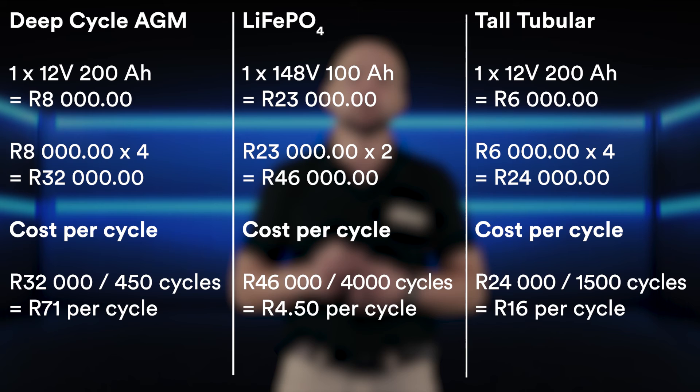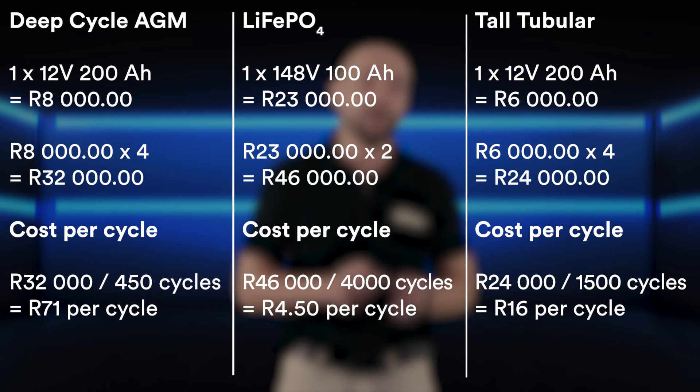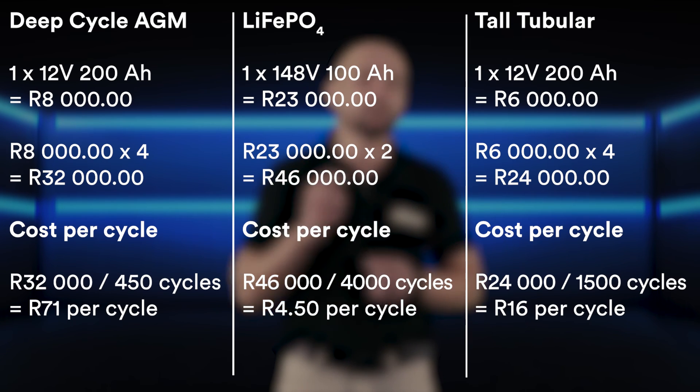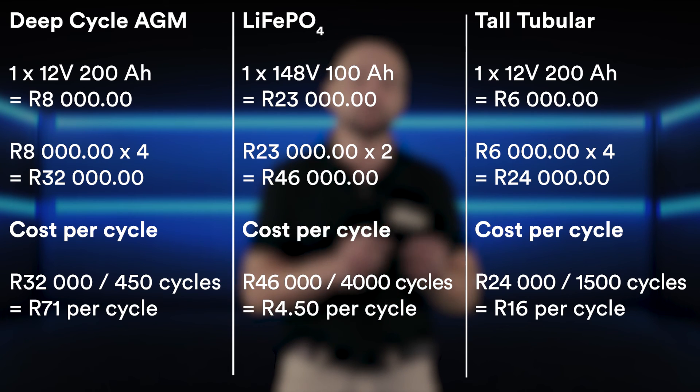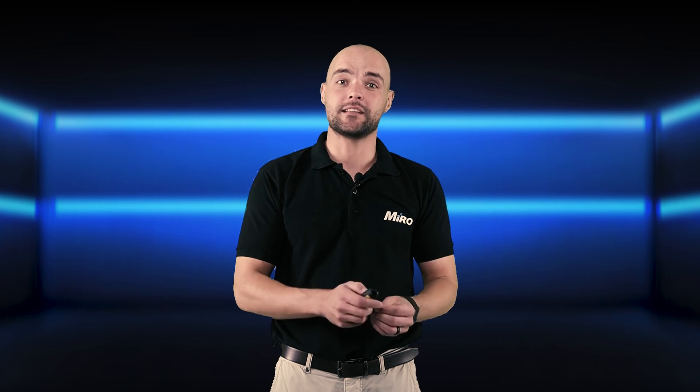This is slightly higher when compared to lithium. However, take into consideration that your initial capital layout for the battery bank is only half of the lithium solution. So what is the best cost per cycle battery currently available? Our recommendation is the tall tubular battery solution from Luminous, as the initial capital layout is less when compared to the other solutions, and the cost per cycle sits at less than 20 rand — making this a cost-effective, robust solution for the South African and African market.